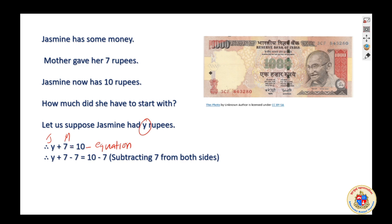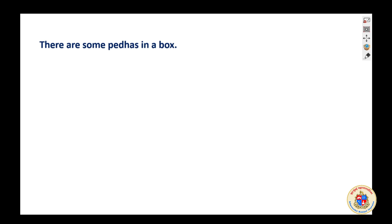Now we have to remove this seven because we have to write Y is equal to. So we will subtract seven on left side. Subtract seven on both sides. Then we got Y plus zero is equal to three. Y is three. It means Jasmine had three rupees at the start. Jasmine had three rupees to start with.